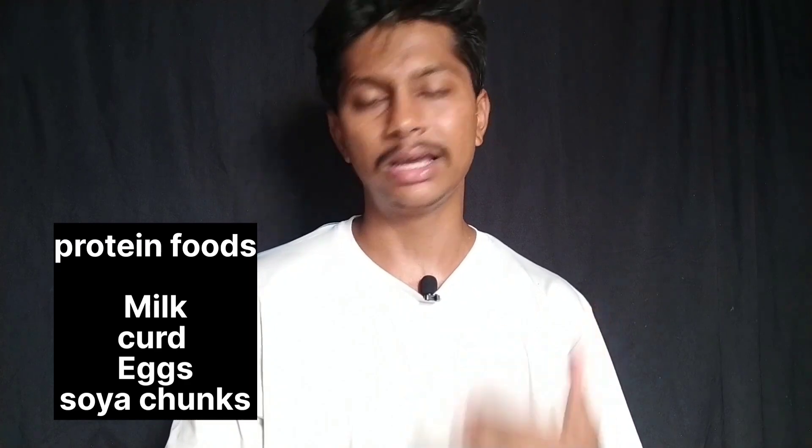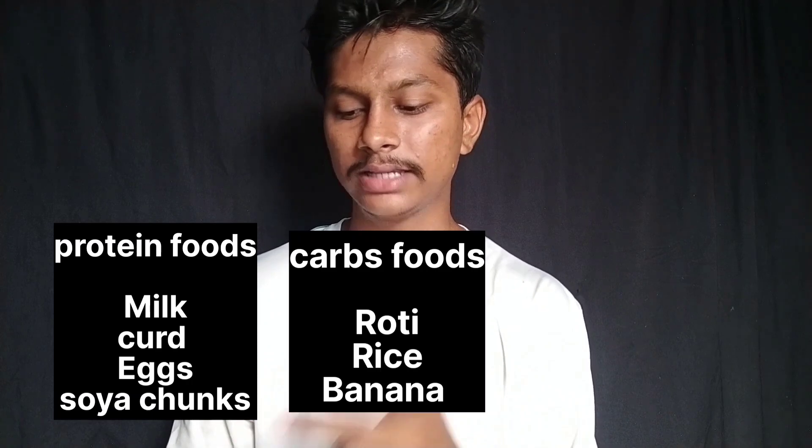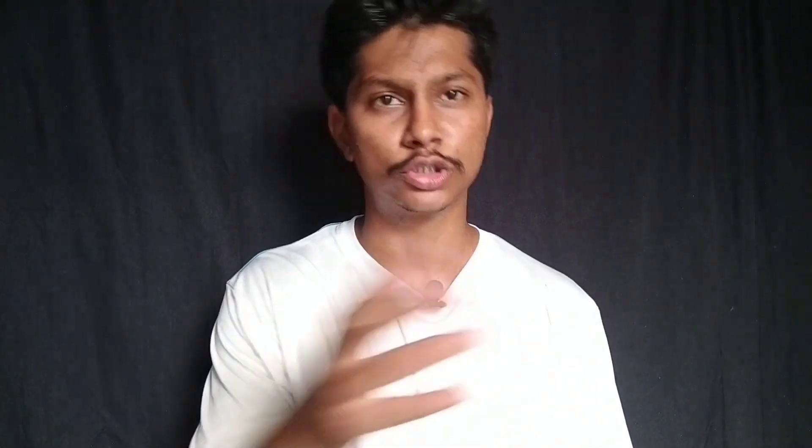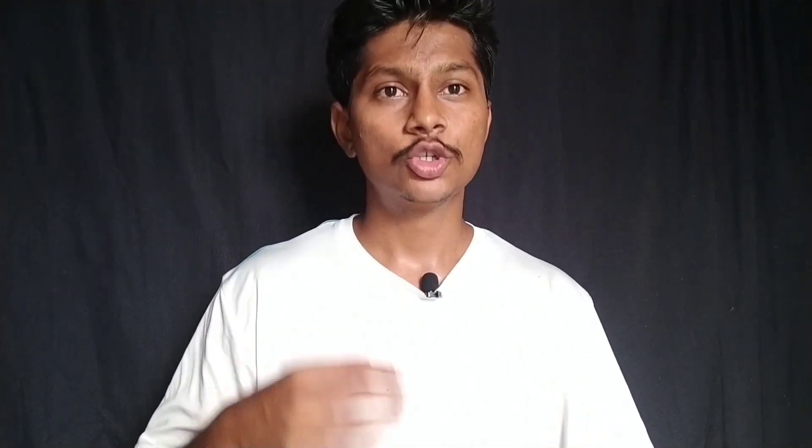Now you need to know protein foods, carbohydrate foods, and fat foods. This person is middle class. For protein, use milk, curd, and eggs. For carbohydrates, use roti, rice, and banana. For fat, use peanut butter. We also have chicken, and soy chunks as a protein source. You can download the MyFitnessPal app to track your food from these sources.